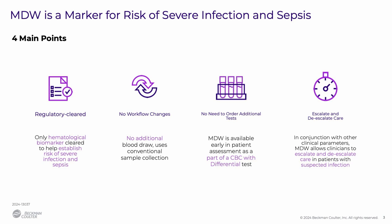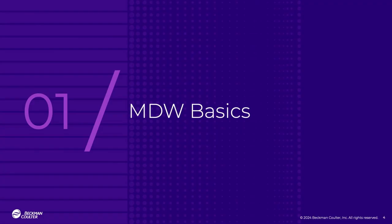Monocyte distribution width, or MDW, is a regulatory cleared marker. MDW is assessed as part of the CBC with differential, so there are no extra blood draws and no extra orders. Providers will see one new parameter on the CBC with diff lab report. Let's discuss the scientific rationale behind MDW, and then I'll share some data on its diagnostic performance and clinical utility.